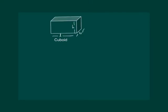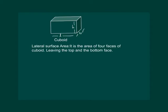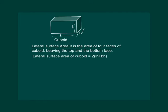Now suppose out of the 6 faces of a cuboid we only find the area of 4 faces, leaving the top and the bottom faces. In such a case the area of these 4 faces is called the Lateral Surface Area. It is defined as the area of 4 faces of the cuboid leaving the top and the bottom face. Mathematically, the lateral surface area of the cuboid is equal to 2 times (length × height + breadth × height).